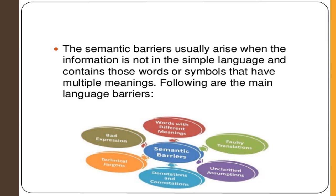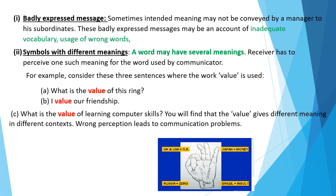The types of semantic barriers are: badly expressed message, symbols with different meanings, faulty translation, unclarified assumptions, technical jargons, and body language and gesture coding. Badly expressed message means when a manager is not good in using the correct vocabulary — for example, a manager whose mother tongue was Punjabi spoke English that felt like Punjabi, and the message he was conveying could not be understood because of his wrong choice of vocabulary and usage of wrong words.